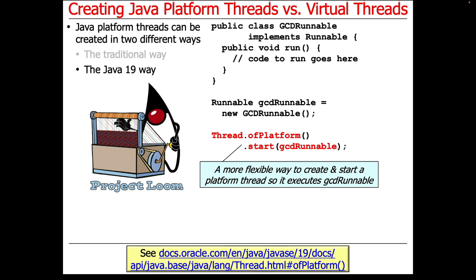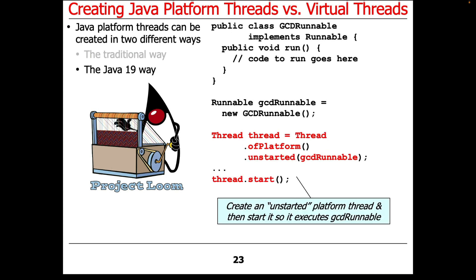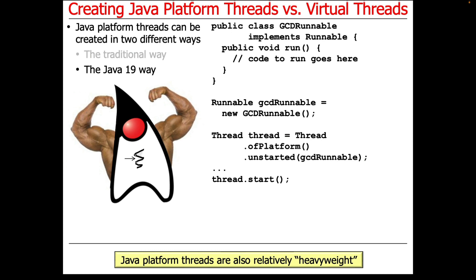However, you can also do things in a more flexible way in Java 19 by saying Thread.ofPlatform() and then starting a thread — that's a factory method. You can say ofPlatform, which makes a platform thread, and then start and run a given Runnable. Why is this more flexible? You can also say Thread.ofPlatform().unstarted() to create a platform thread with a Runnable but not start it yet, and then start it at some later point. So you can create a bunch of threads that aren't started and start them later. Platform threads are also relatively heavyweight, just repackaged in a slightly more flexible way.